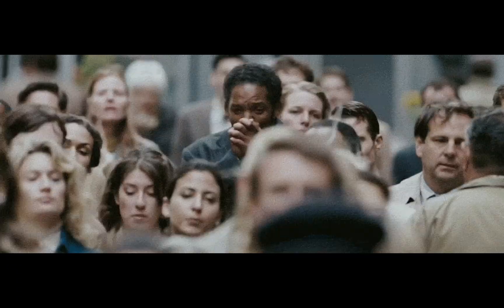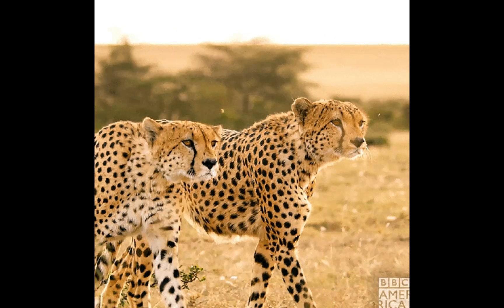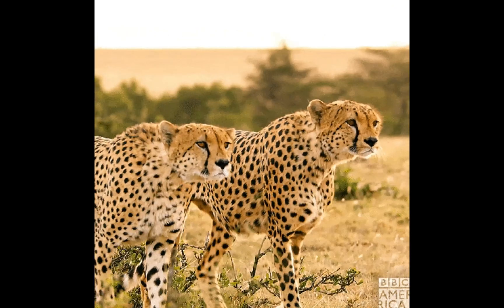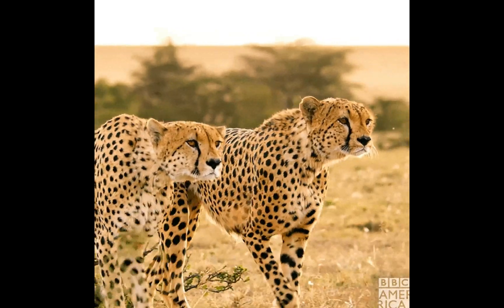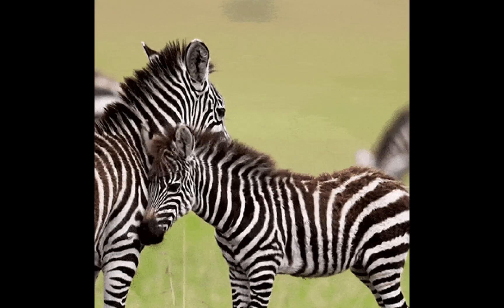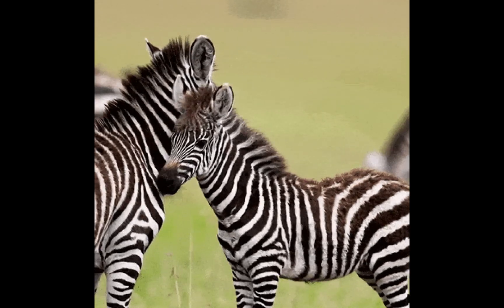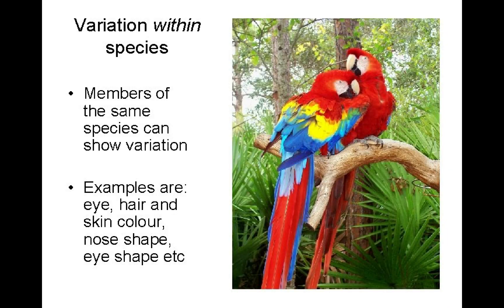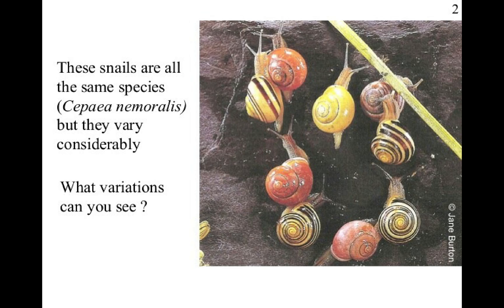Have you noticed that not one of us looks the same? Even if we are all from the same species — thank goodness! This is the same for other species. For example, the patterns on cheetahs are all unique, as well as the stripes on zebras, which makes it possible to distinguish between individual animals. Variation in the same species is brought about by different factors.